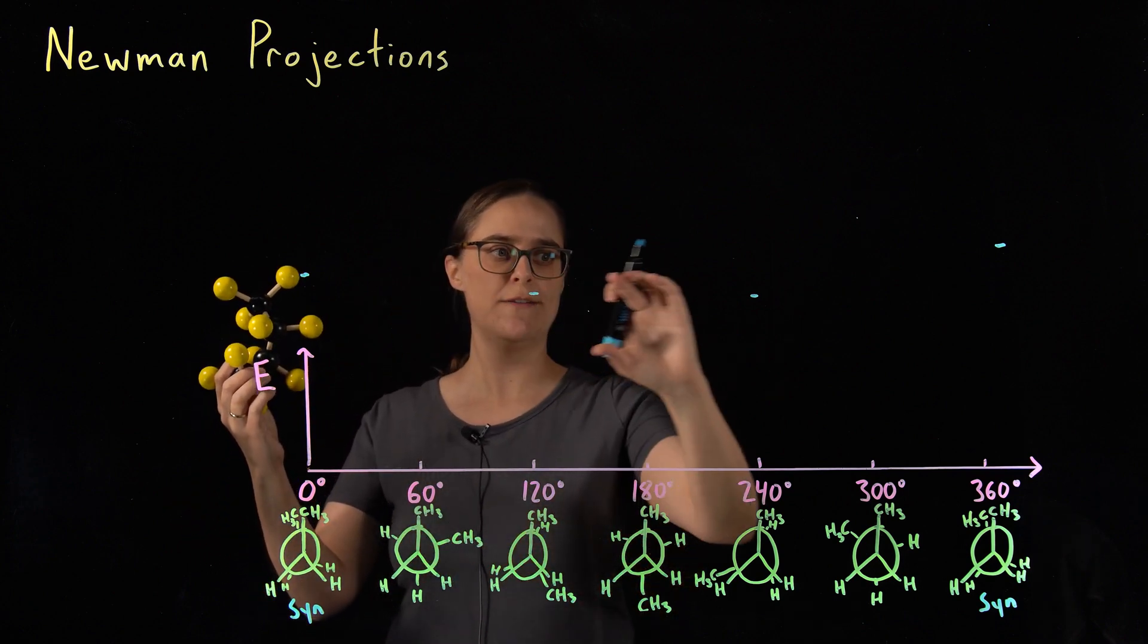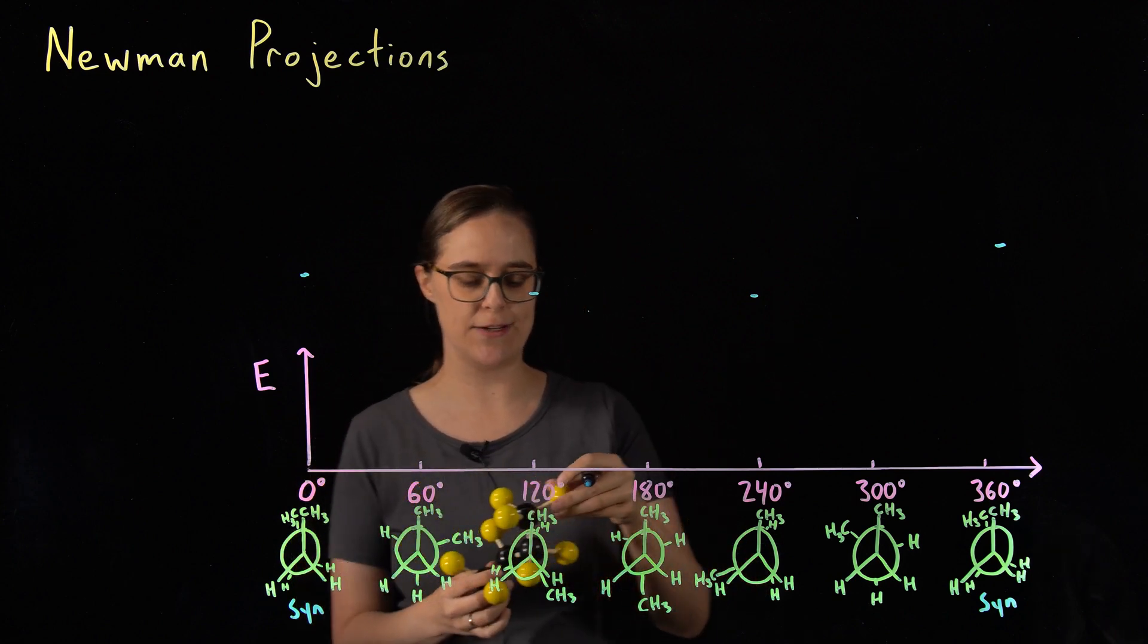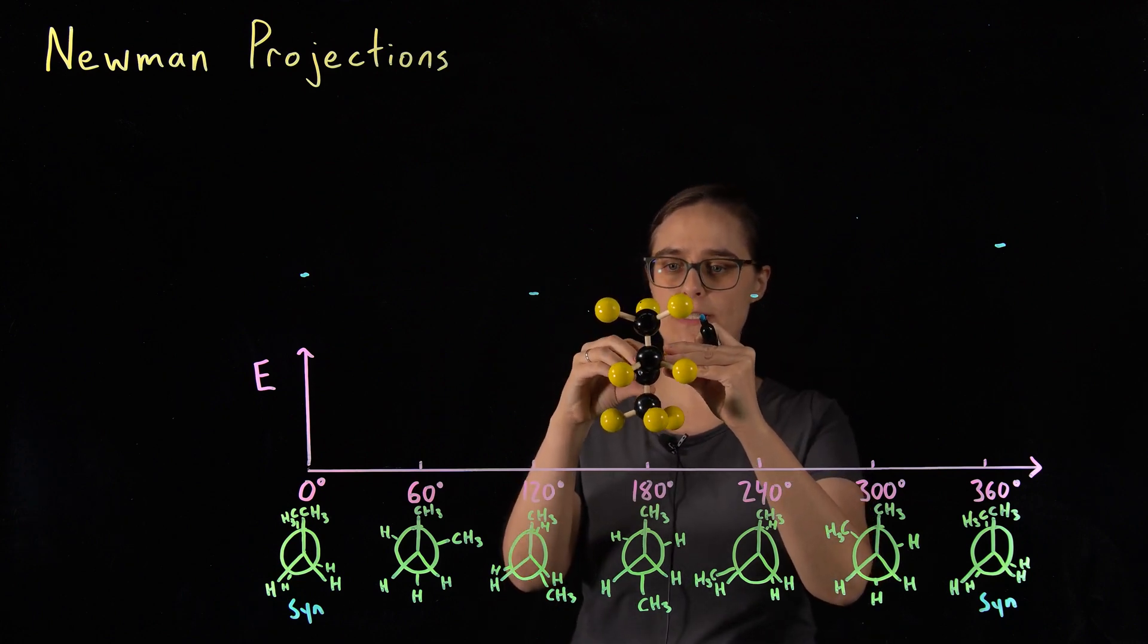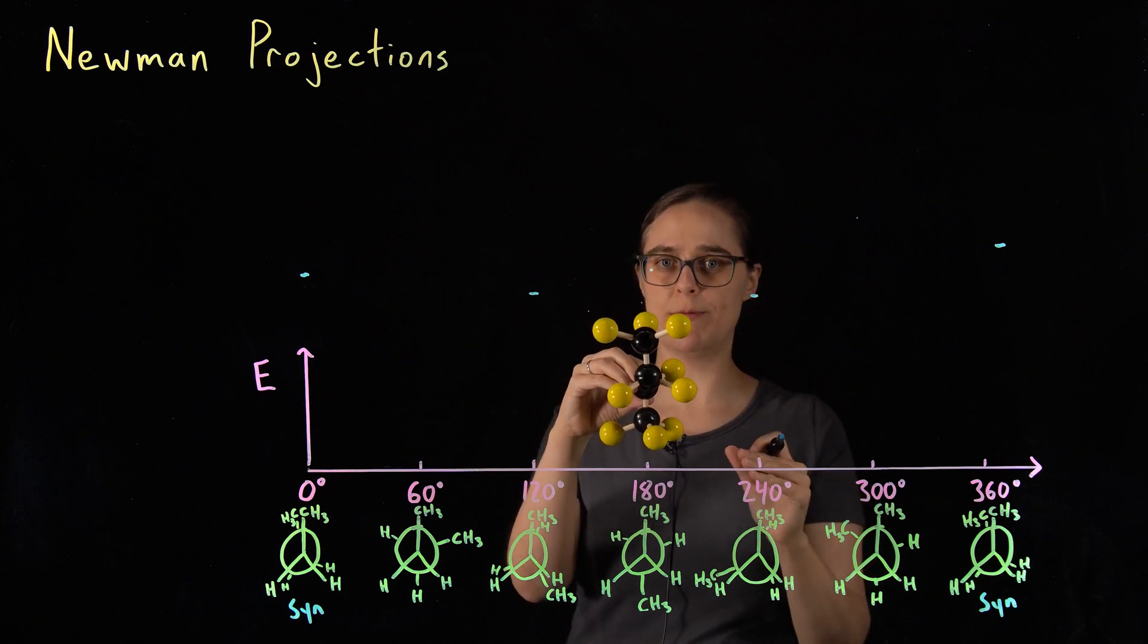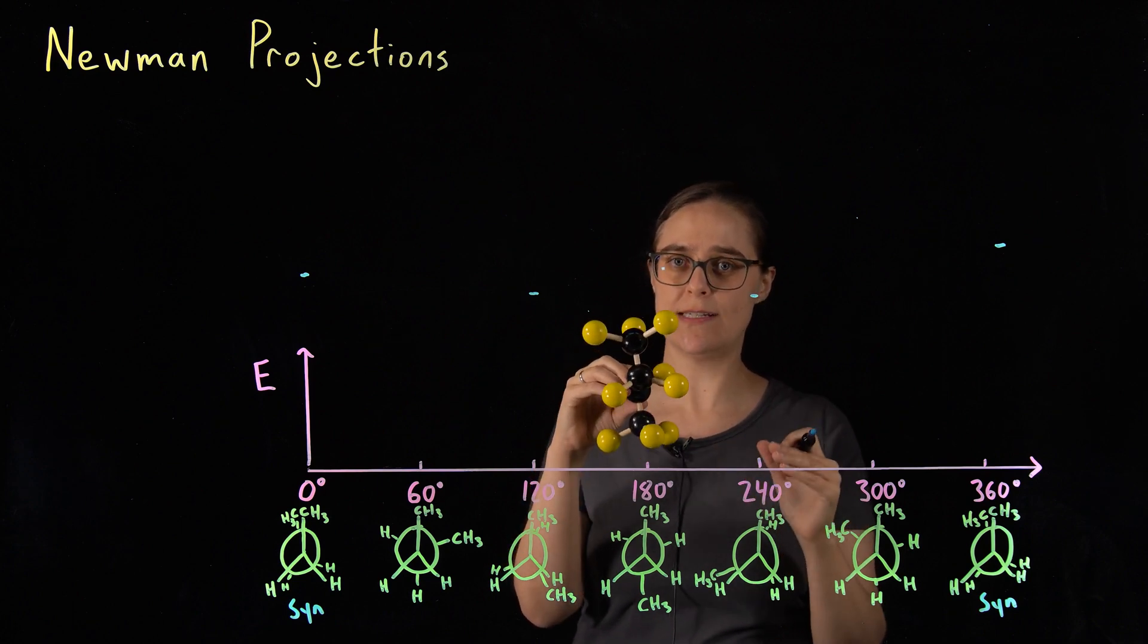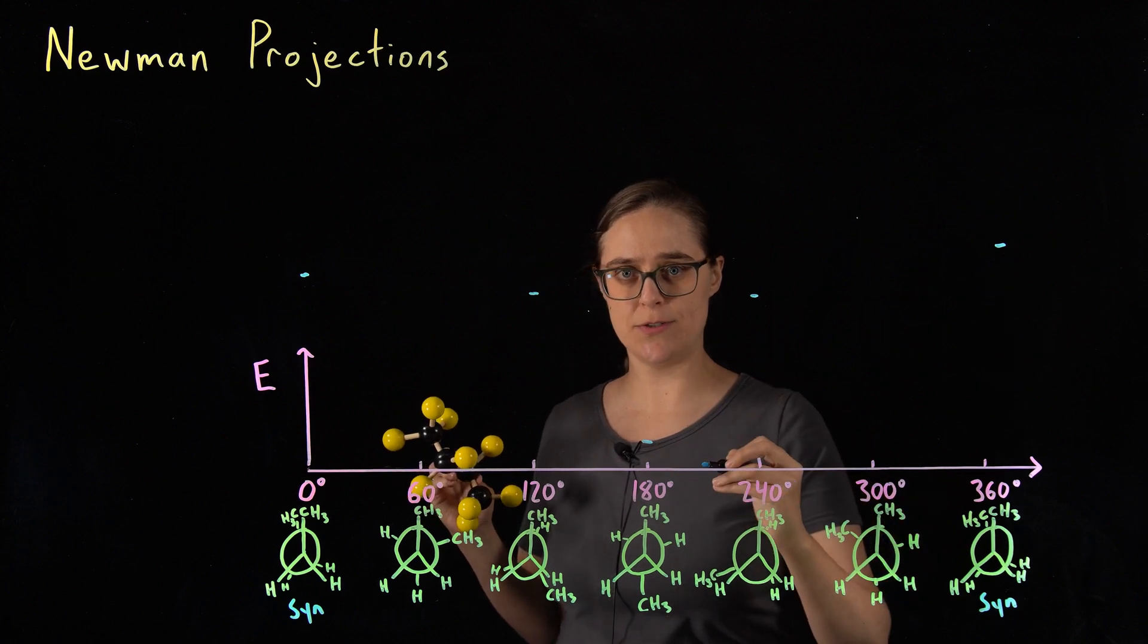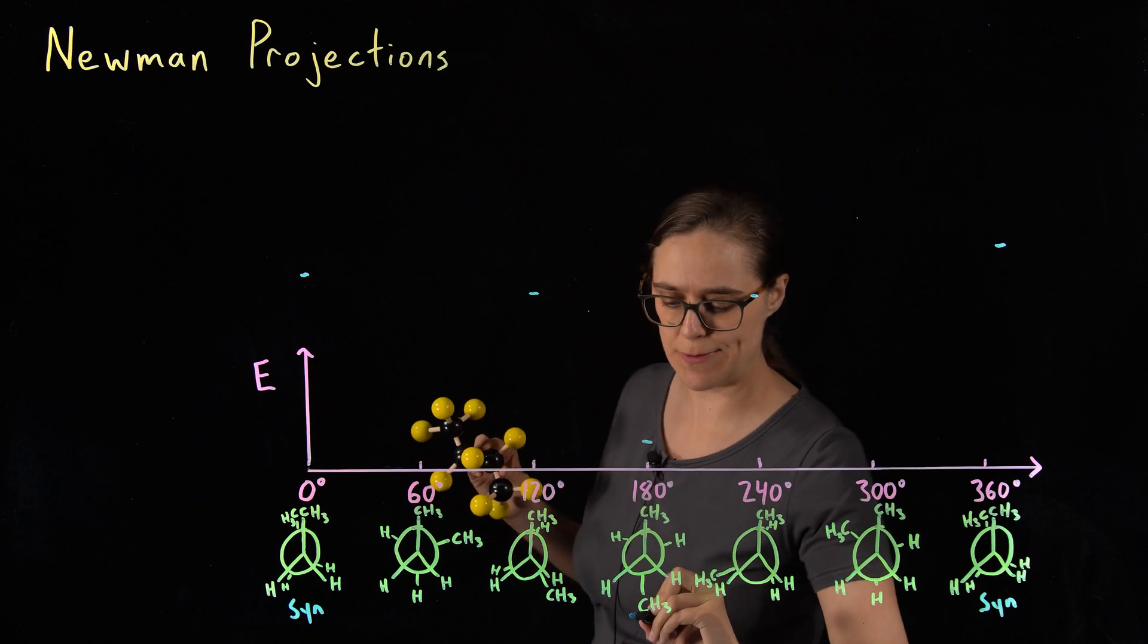So far I have shown you the various types of eclipsed conformations. Now let's move on to staggered. Let's take a look at this 180 degree dihedral angle. This is the most stable, lowest potential energy. The two methyl groups are as far apart from each other as they can possibly be. This is the least amount of steric hindrance we can have without this molecule falling apart. So 180 degrees is going to be our lowest potential energy, most stable conformation. This is called an anti-conformation.